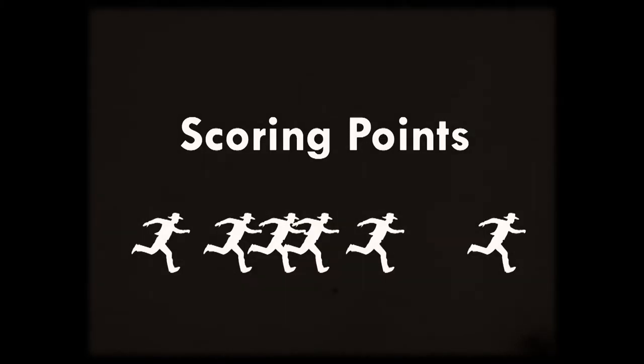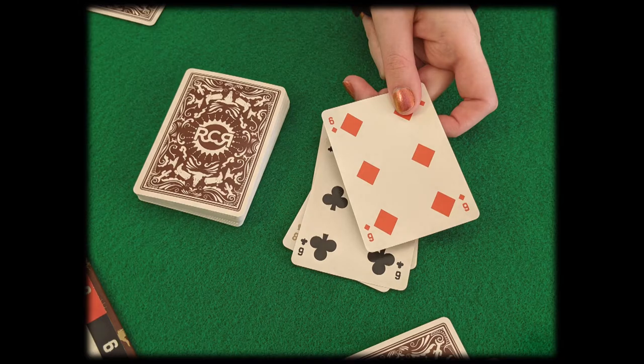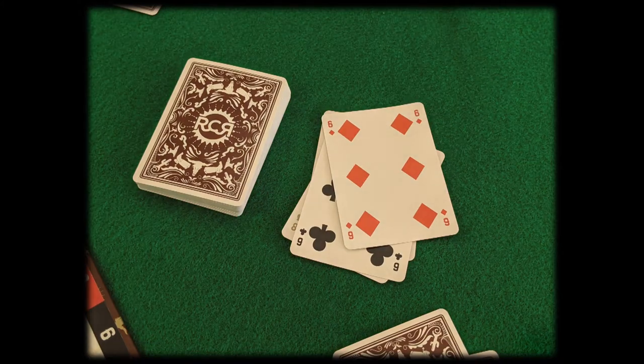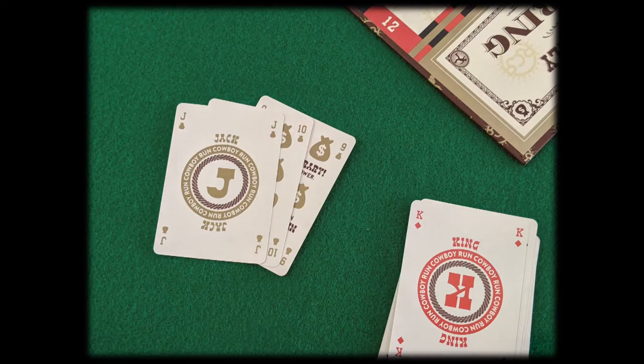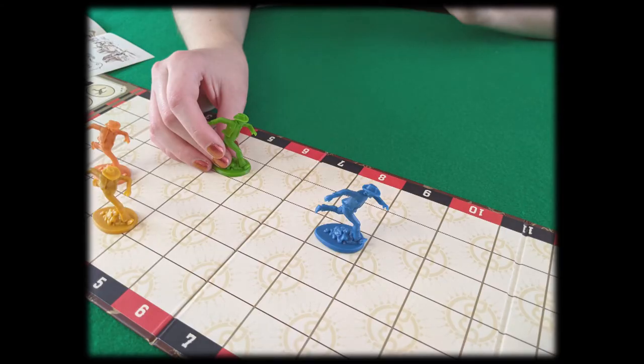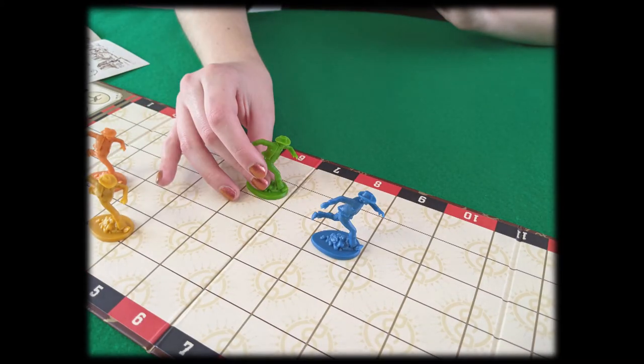Scoring Points. Players score points in the game by making pairs or more, taking tricks, and collecting gold-suited cards. For every point they score, they move their cowboy down the track that many spaces.